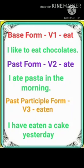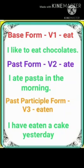We will discuss about 3 forms of the verb. First one is the base form — we call it V1 or first form of the verb. Then past form — that is V2 or second form. Then past participle form — that is V3 or third form. Let's discuss an example. First form of the verb is 'eat,' second form is 'ate,' and third form is 'eaten.' See how it changes its form according to time.